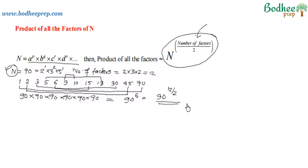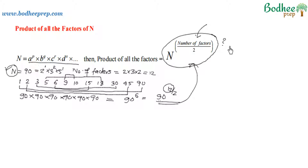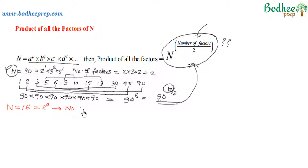We observe that 12 is the number of factors of 90. So the product of all the factors is given by n to the power (number of factors divided by 2). Now, one doubt might arise: I have taken 90 which is not a perfect square. What if the number is a perfect square — will this formula still be applicable? Let's take an example. Let me take 16, which is a perfect square. Since 16 = 2 to the power 4, the number of factors of 16 is 5.